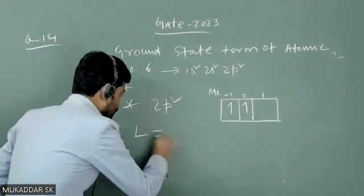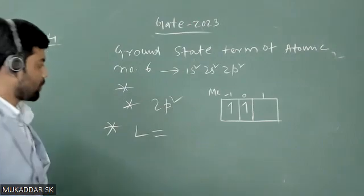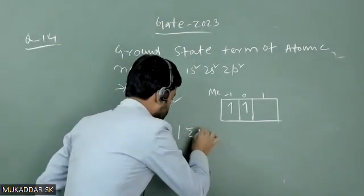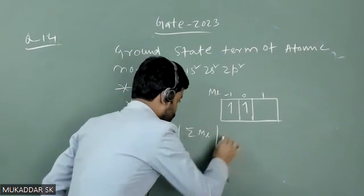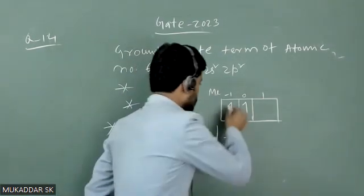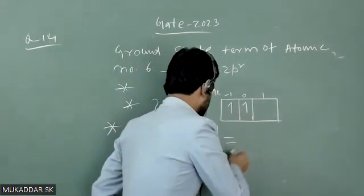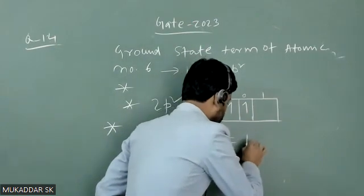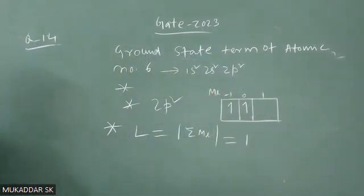What will be the total L of these two electrons? That will be modulus of sum over ml, and that will be ml is minus 1 plus 0, so its modulus will be 1.